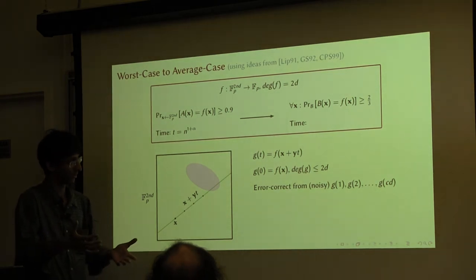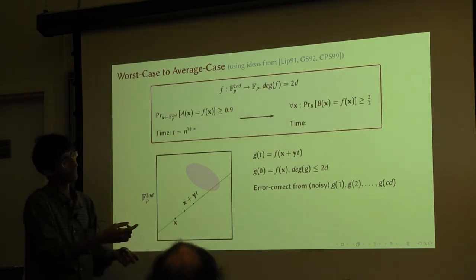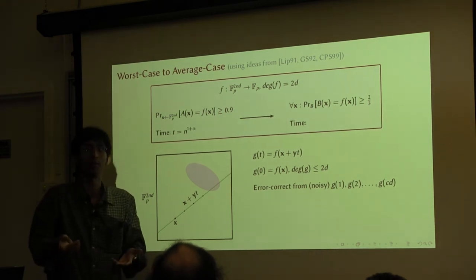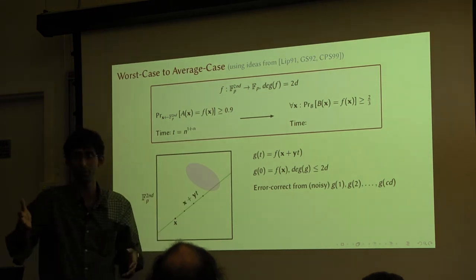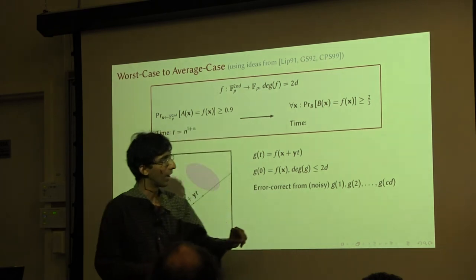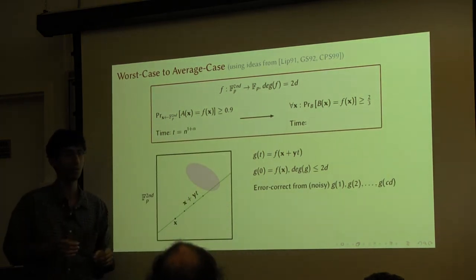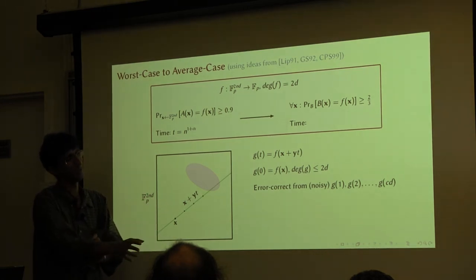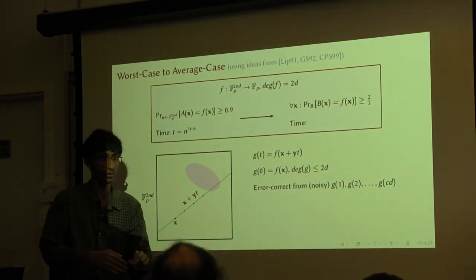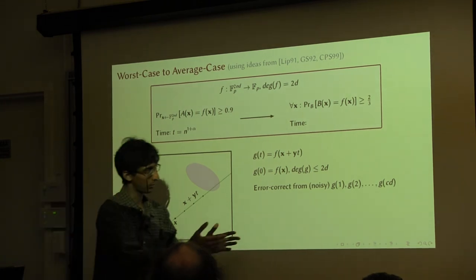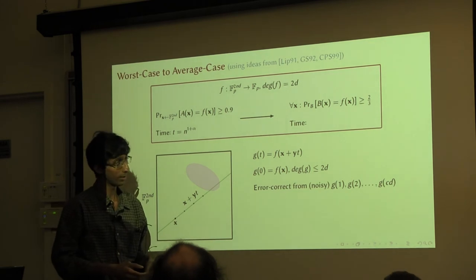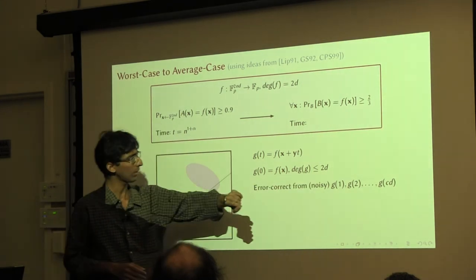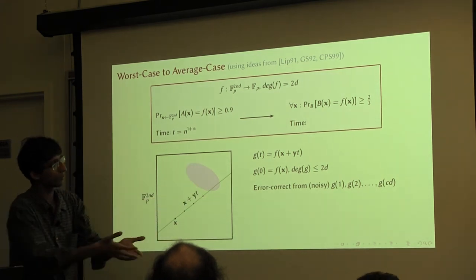Once I have the guarantee that 70% of my evaluations are correct, I can error-correct these evaluations to get the value of F of x. This object — a univariate polynomial evaluated over different points in the field — is just a Reed-Solomon code, where G is the message and this set of evaluations is the codeword. By choosing C large enough, I can guarantee that I can correct from a 30% fraction of errors using, for example, the Berlekamp-Welch algorithm. It tells you that as long as the fraction of errors is not more than some constant, running that algorithm gives you all the coefficients of G. Then you evaluate G at 0 and find the value of F of x.